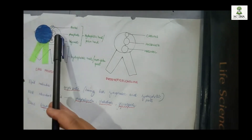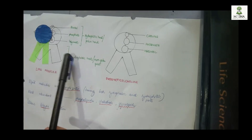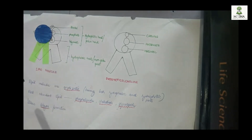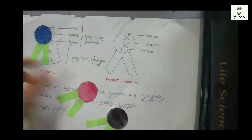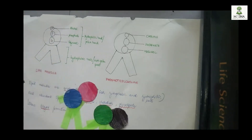Alcohol attaches to phosphate, and in turn to glycerol. The hydrophobic tails are fatty acid chains. This is the structure of a lipid molecule. Most of us are aware that lipid molecules are arranged in layers to form a membrane.